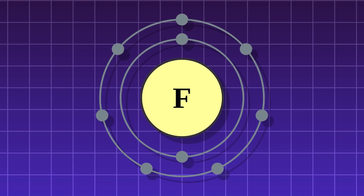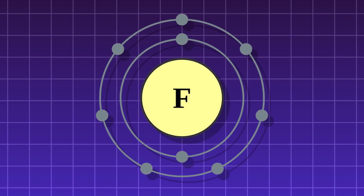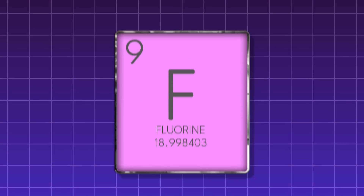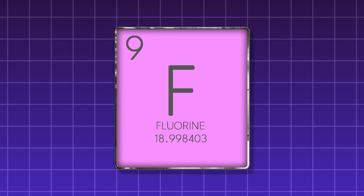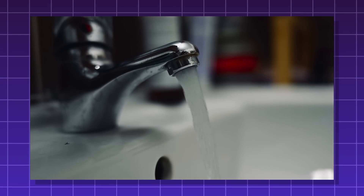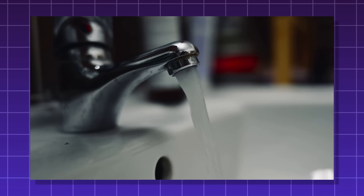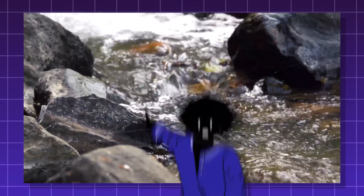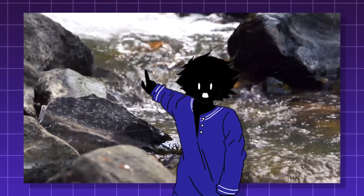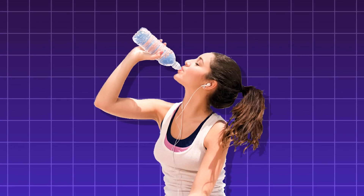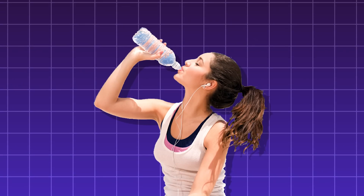Fluoride is a negatively charged ion from the element fluorine. That means it has more electrons than it has protons. It's represented with the chemical symbol F and it looks like this. You commonly hear about fluoride being in our tap water, but it is actually also found in groundwater. Basically, anywhere where water comes in contact with rocks, you'll find fluoride in it. It can even be found in bottled water.